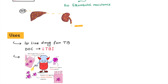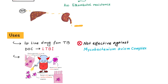Isoniazid is bactericidal against both intra- and extracellular fast-growing mycobacterium. However, it has a static effect on slow growers. Among the first-line drugs, it is the drug that makes the patient non-infective earliest. One important point: it is not effective against mycobacterium avium complex.